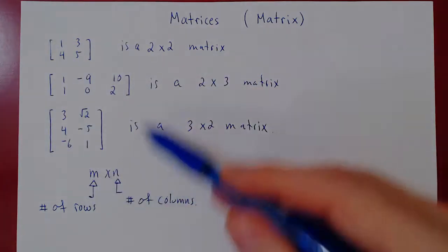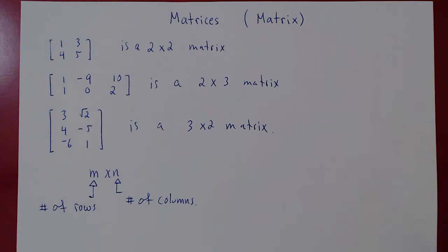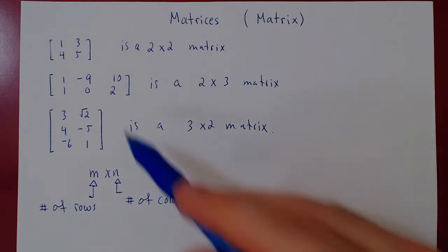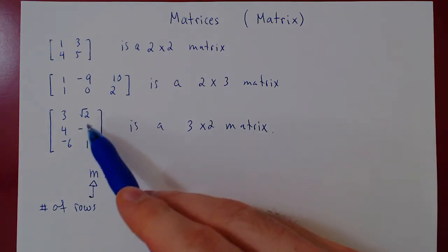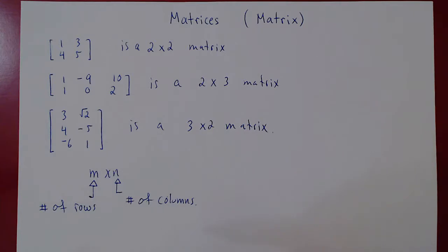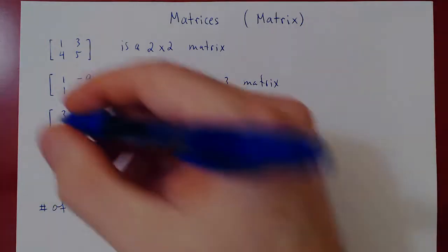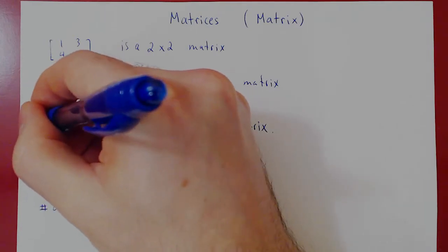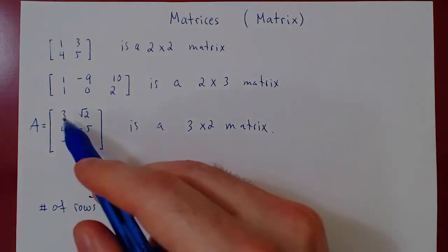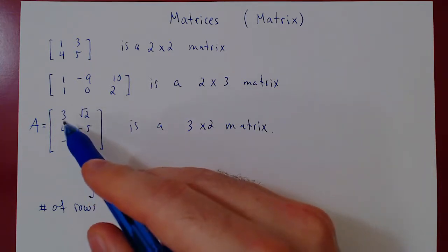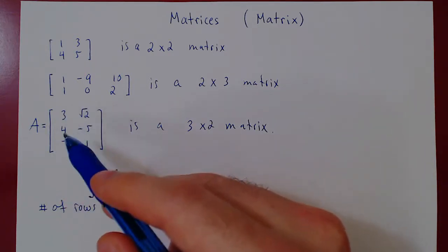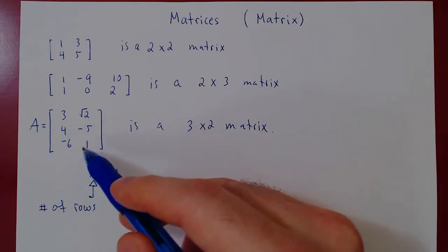Every time we have a new object, we ask: can we perform operations on our new objects? The answer is yes, but first let us consider the notion of equality and the notion of entries of a matrix. Suppose we call this matrix A. The entries are simply the numbers making up the matrix, so the entries of A would be 3, root of 2, 4, negative 5, negative 6, 1.